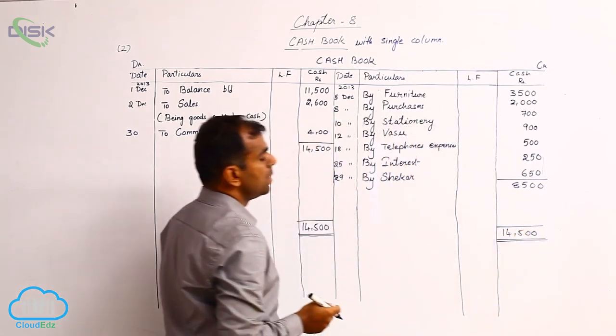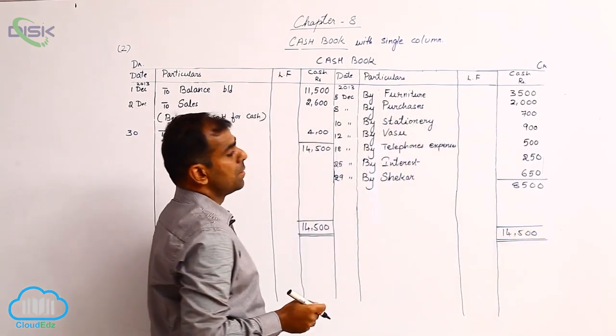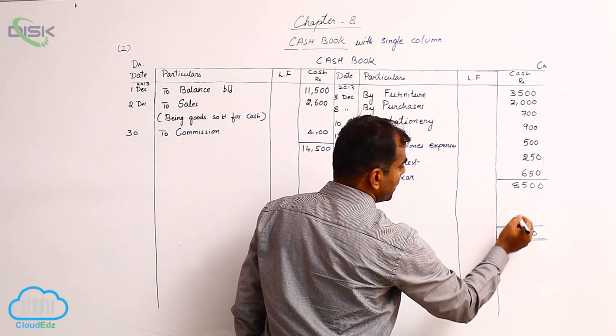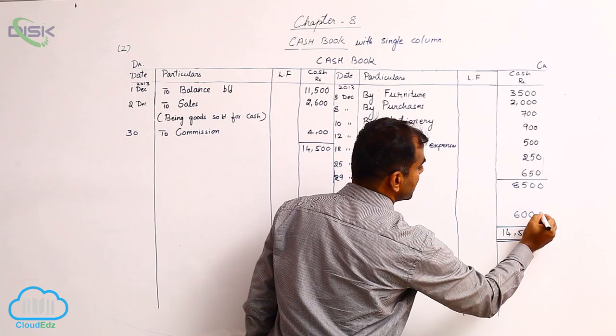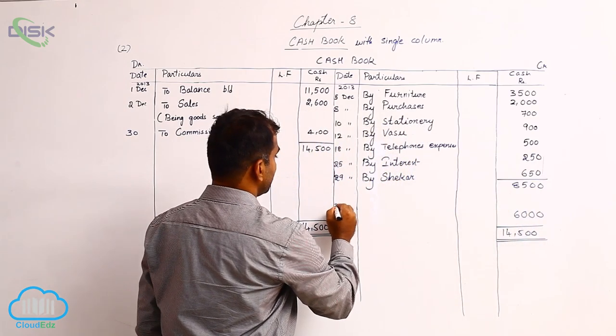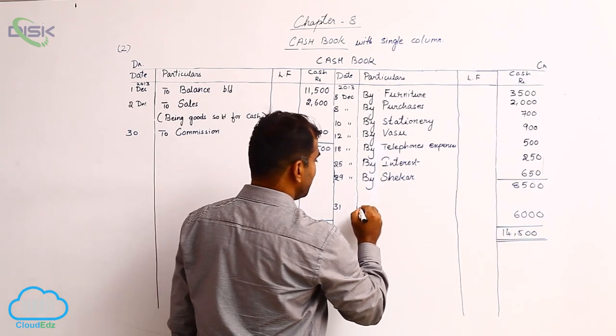Now in order to balance this side which is short by 6,000, we say 14,500 minus 8,500, you get the balance as 6,000 here, and the date is December 31st because that is the last day of the month.